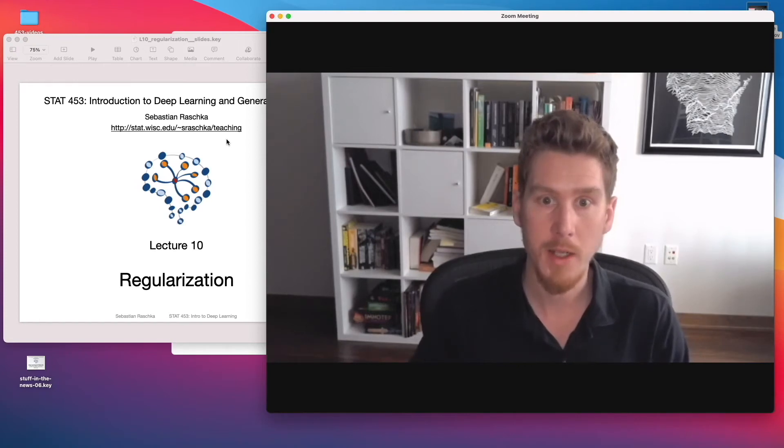Hi, everyone. So in the last lecture, we covered multilayer perceptrons. You are hopefully now able to train deep neural networks. That brings us also to the topic of how do we make neural network training better? How do we produce better models?